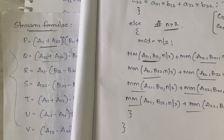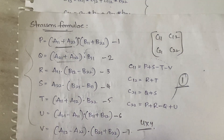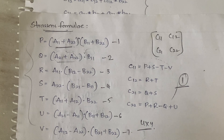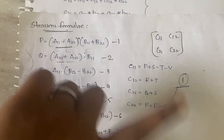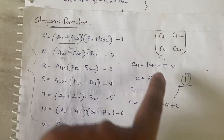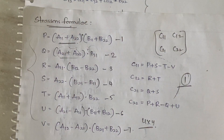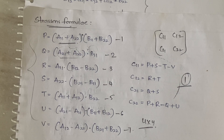That is all about Strassen's matrix multiplication. You first break the given parent matrix into submatrices — that is dividing — then you solve them (conquer), apply the values in the formulas, and get the final matrix of order 4x4. This is all about this video — a very short one. Thanks for watching. If you still have any doubts, let me know in the comment section, and consider subscribing if you like my content.